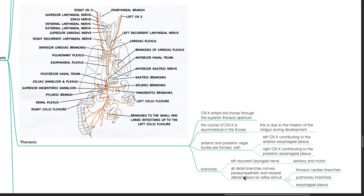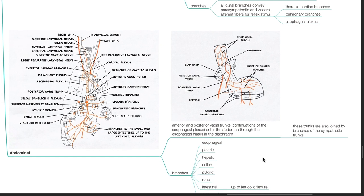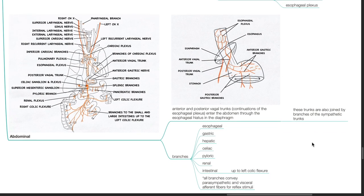All distal thoracic branches convey parasympathetic and visceral efferent fibers for reflex stimuli. The abdominal division: anterior and posterior vagal trunks, which are continuations of the esophageal plexus, enter the abdomen through the esophageal hiatus in the diaphragm; these trunks are also joined by branches of the sympathetic trunks. Branches of the abdominal division include the esophageal, gastric, hepatic, celiac, pyloric, renal and intestinal branches up to the left colic flexure. All branches convey parasympathetic and visceral efferent fibers for reflex stimuli.